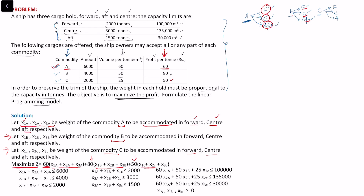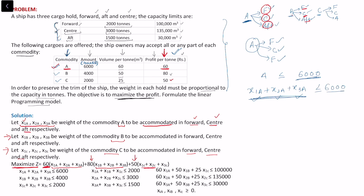For the constraints, commodity A can go to three places and the total available is 6000 tons. So x1a + x2a + x3a ≤ 6000. Similarly, we write commodity constraints for B and C based on their respective total availability. These are the commodity constraints ensuring we don't exceed the available supply of each cargo.